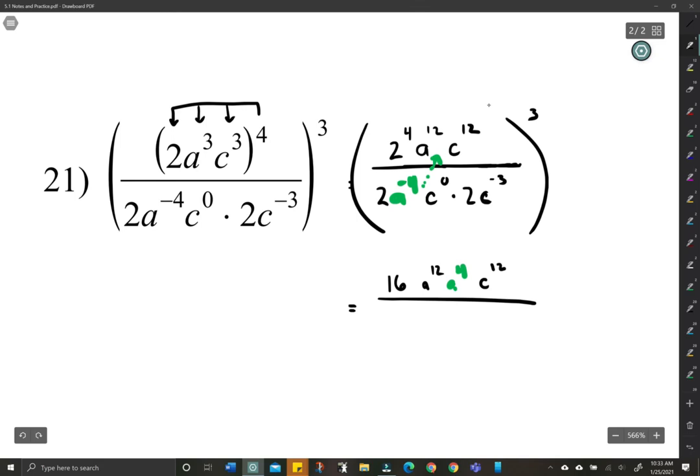This c to the negative 3, we can also move it up here, too, for the time being. It's going to make it a little nicer because it's negative. Now, c to the 0. c to the 0 is just 1.